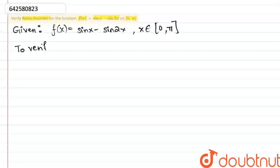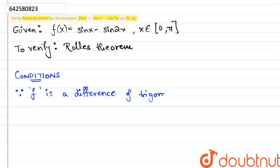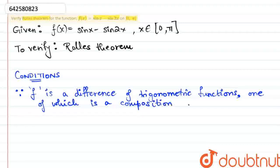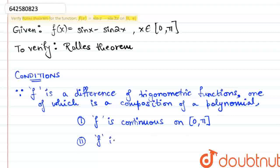We are supposed to verify the Rolle's Theorem of the given function on the given interval. Now, there are three conditions that must be satisfied for Rolle's Theorem to apply. Now, since f is a difference of two trigonometric functions, the latter of which is going to be the composition of a trigonometric and a polynomial function, that is sin 2x, f is going to be continuous over the closed interval 0 to pi and differentiable on the open interval 0 to pi.